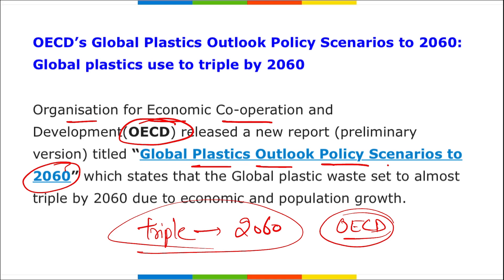Remember: OECD's report on Global Plastic Outlook Policy Scenario to 2060 states that the amount of plastic used by 2060 will be three times the current demand. Also remember that India recently banned the use of single-use plastic, effective from the 1st of July.